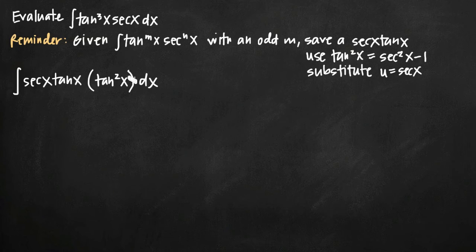We're going to make our substitution, so we have secant of x tangent of x and then our substitution gives us secant squared of x minus 1 times dx.